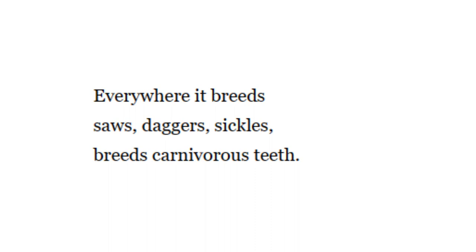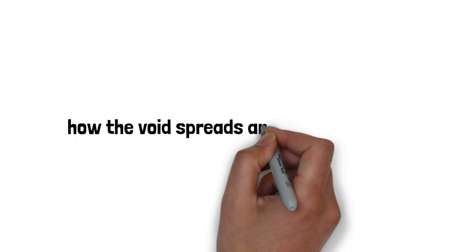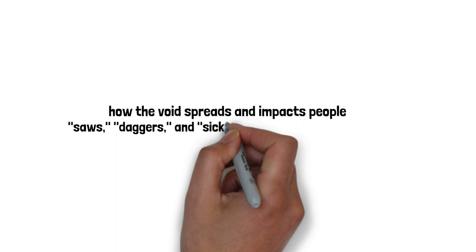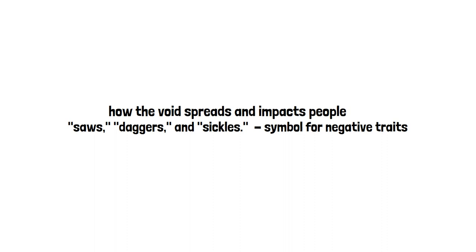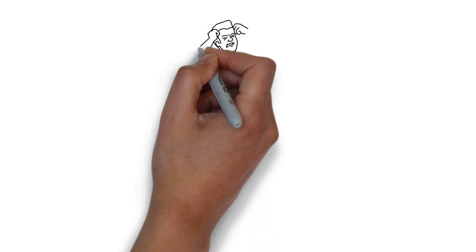The poet goes into more detail about how this void spreads and impacts people. In a symbolic sense, the poet uses the words saws, daggers, and sickles. They stand for negative traits like brutality and cruelty. Muktibodh compares the teeth of those instruments to the carnivorous teeth.